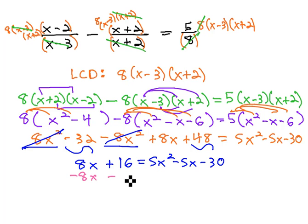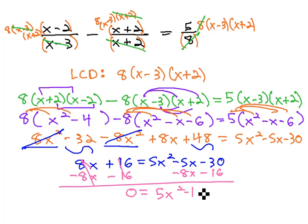Making it equal to 0, we'll subtract the 8x and 16 from both sides. This gives us 0 = 5x² - 13x - 46.